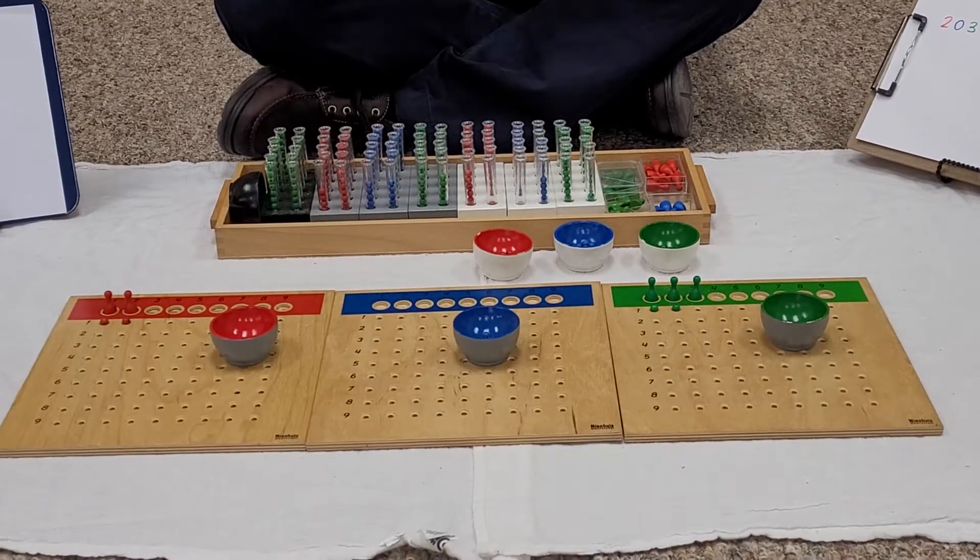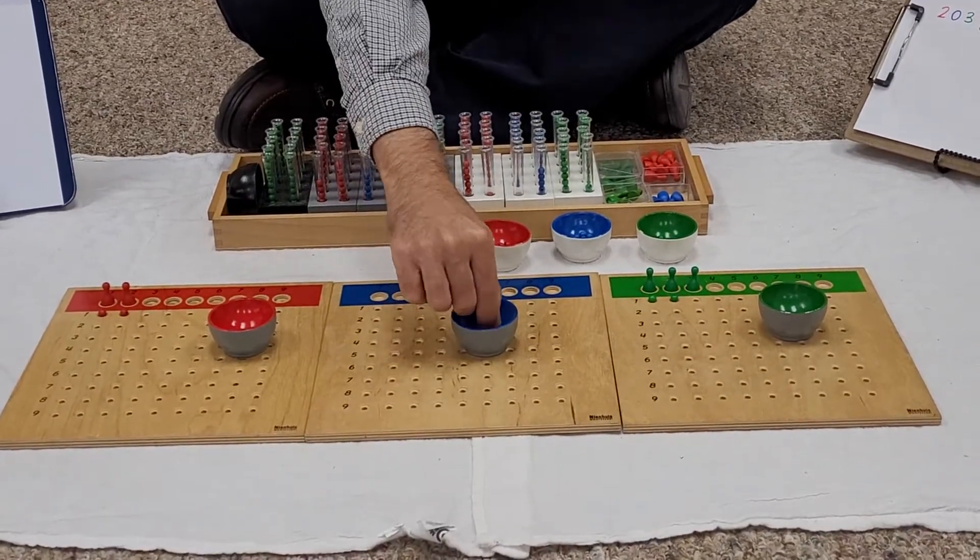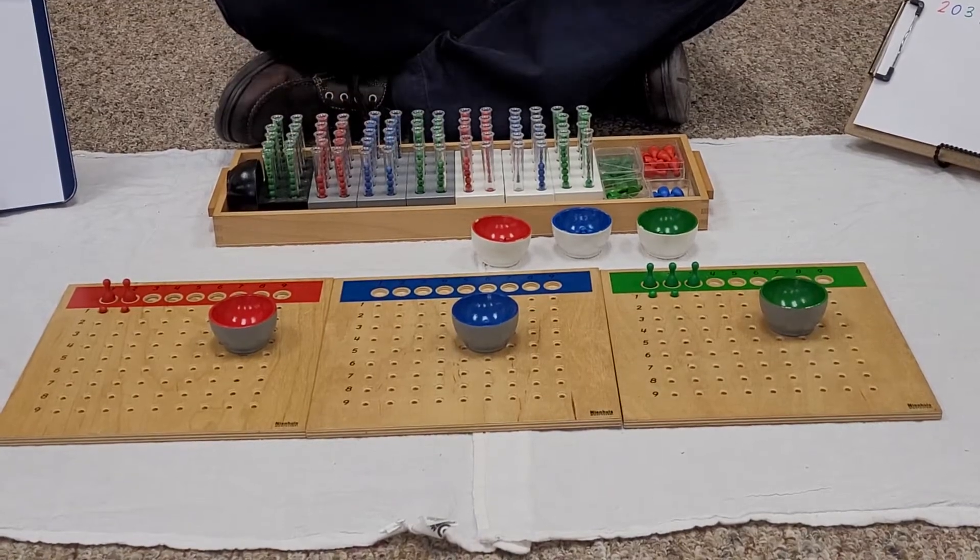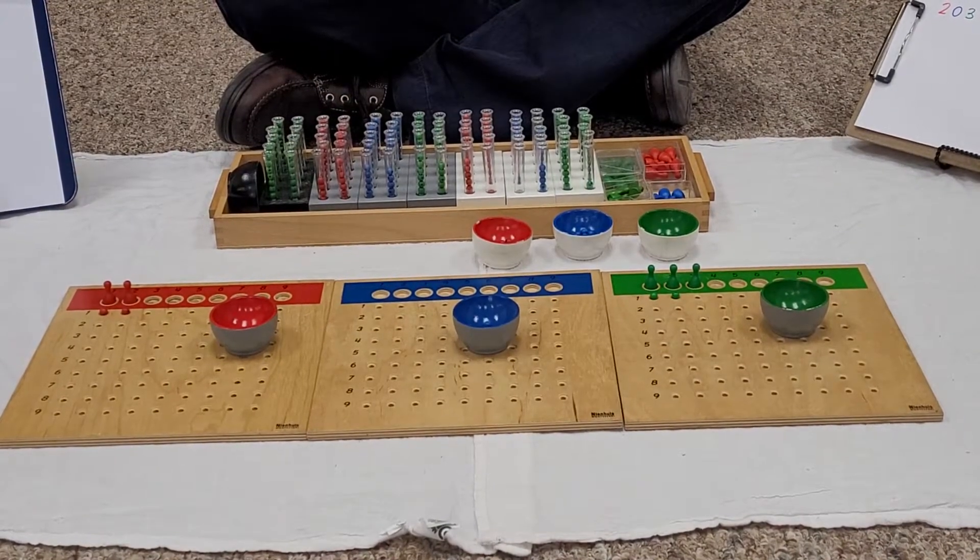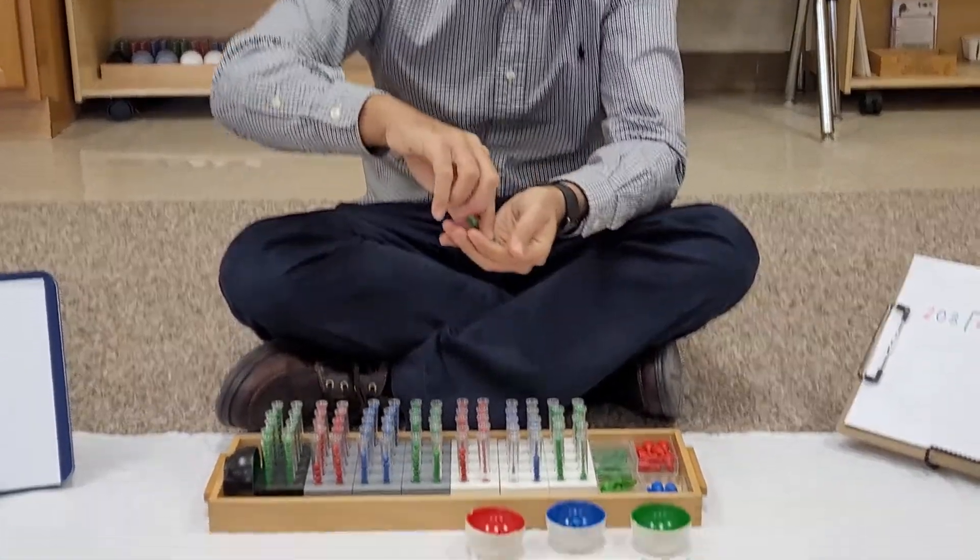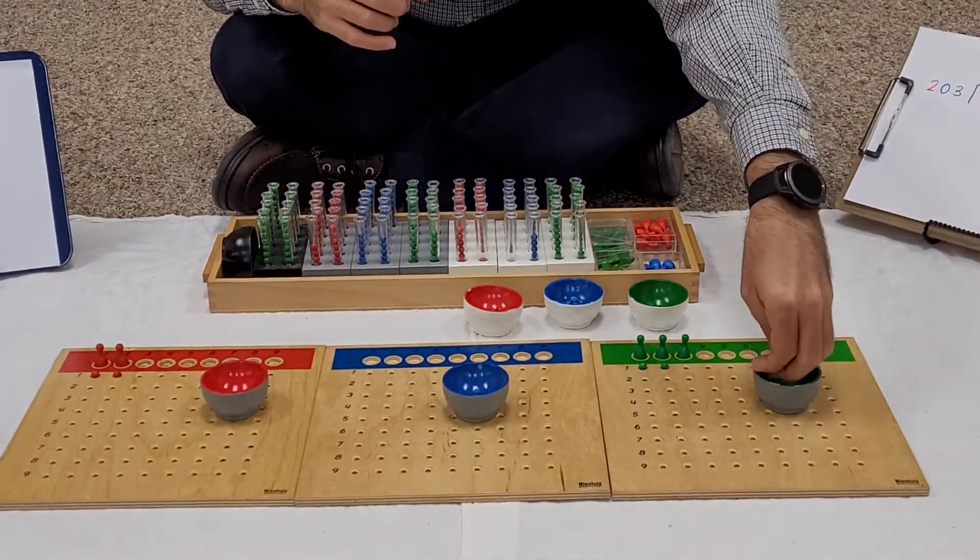They're going to ask the ten thousands. Now tell your students always to check that they have ten: one, two, three, four, five, six, seven, eight, nine, ten.